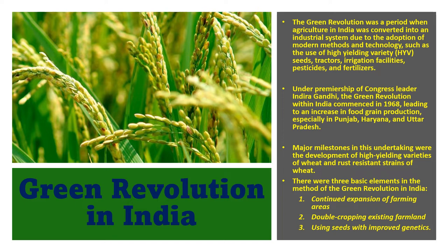This led to an increase in food production, especially in the states of Punjab, Haryana, and Uttar Pradesh. The main person dealing with the green revolution was M.S. Swaminathan, director of the Indian Agriculture Research Institute, who we call the father of the green revolution in India.